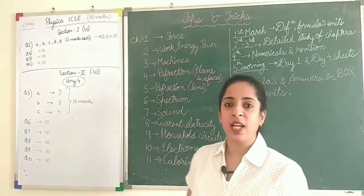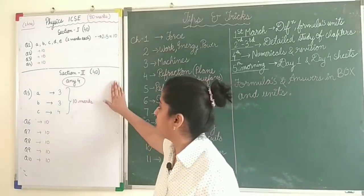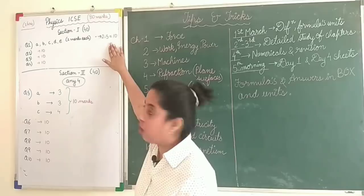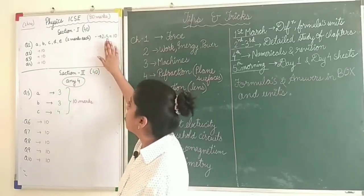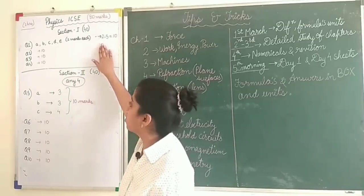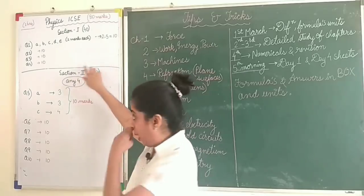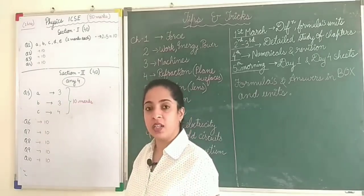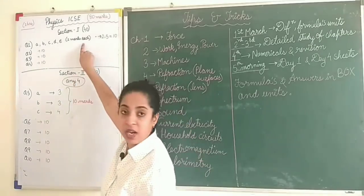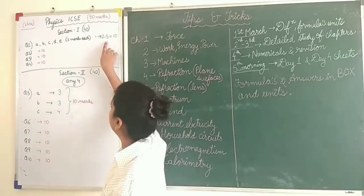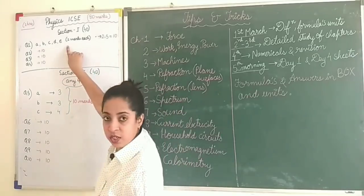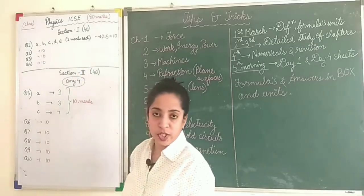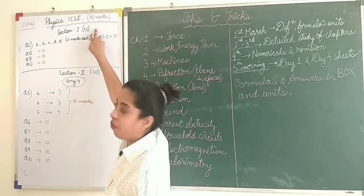Before going into tips and tricks, let me give you a quick recap on the format of the paper. Our physics paper is of 80 marks for 2 hours. Section A, which is compulsory, consists of 4 questions. Each question is divided into 5 parts — A, B, C, D, E — and each part carries 2 marks, making 10 marks per question. So Section A comprises 4 questions of 10 marks each, totalling 40 marks.